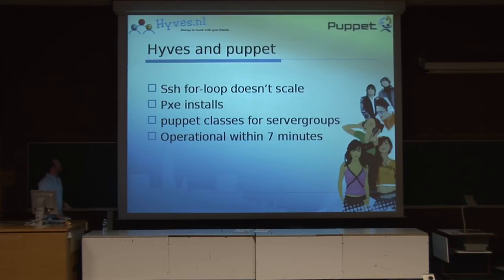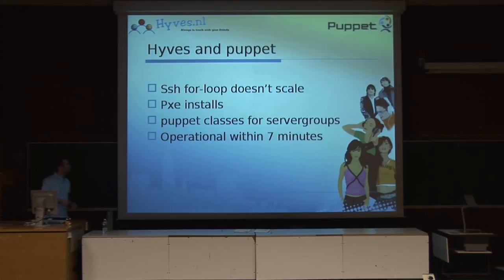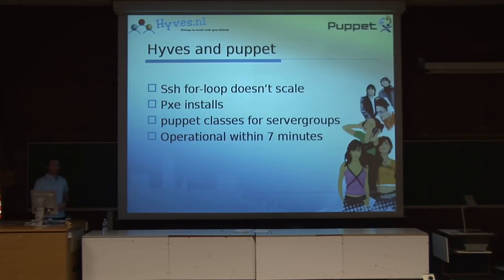I want to go to the point where we use Puppet at Hives. We started out with SSH for-loops, as most system engineers do, but found that doesn't scale, so we came across Puppet. Mainly what we do when we install a server: we open the box, press F12 to do a PXE install, it runs our kickstart the first time and sets the hostname, then in Puppet we put in the right node definition and Puppet does the rest. That way we can be operational within seven minutes for our main web servers. If we rack the box and push F12, we're up and running within seven minutes — a pretty good time to get a server operational.